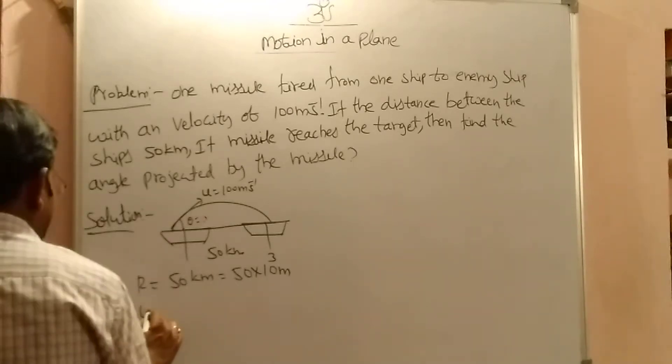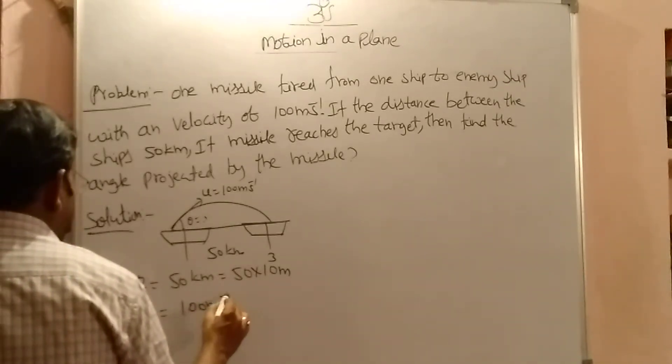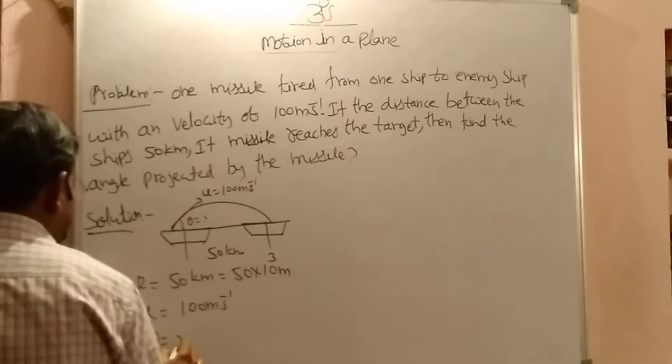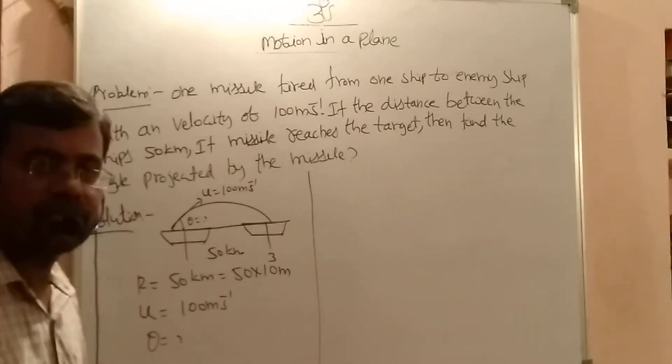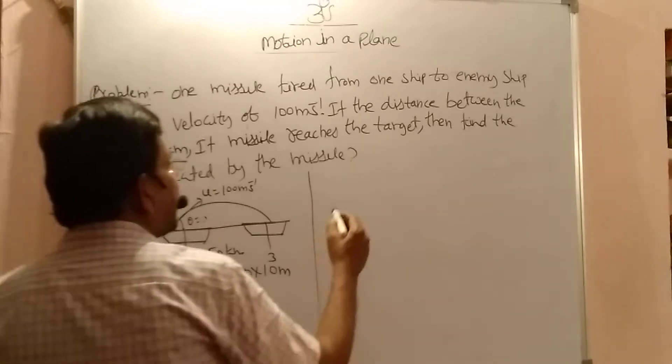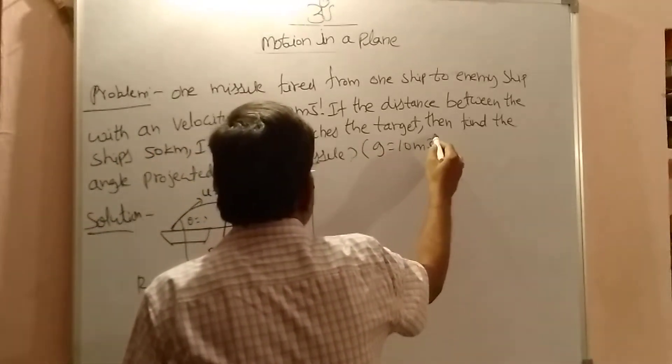Again, velocity of the missile, 100 mps. Now what do I find? Theta. What is the formula for range? R equal to u square sin 2 theta by g. Here I am taking g equal to 10 meter per second square.